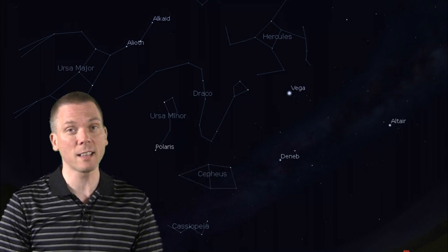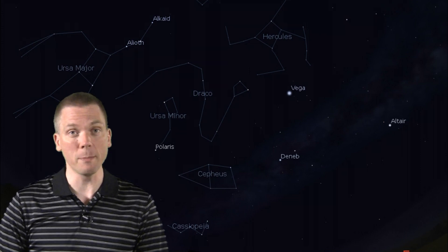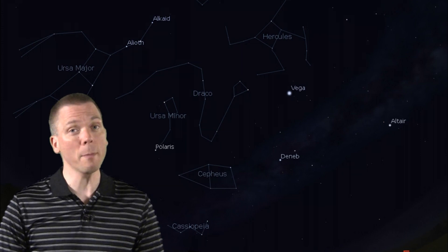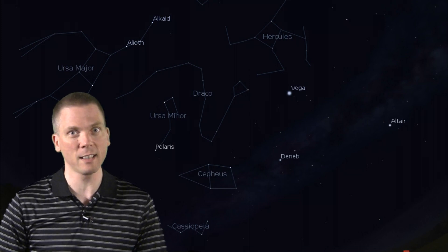The Milky Way then passes just under Cepheus the King, a largely dim, house-shaped constellation, and the dusty band of stars reaches a more prominent set of stars and constellations at that point.